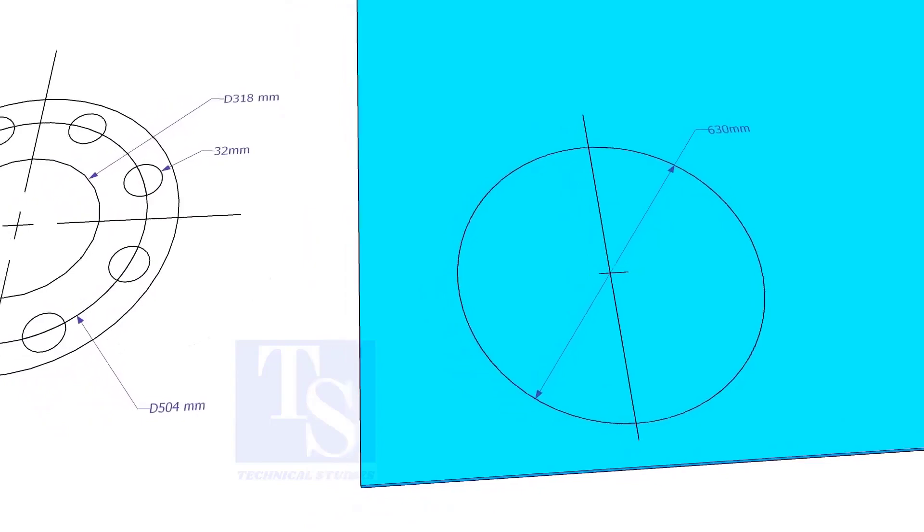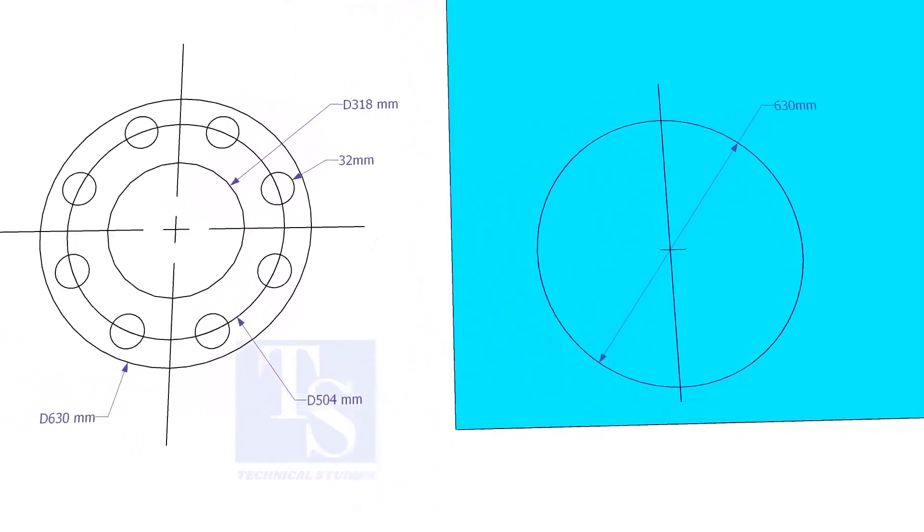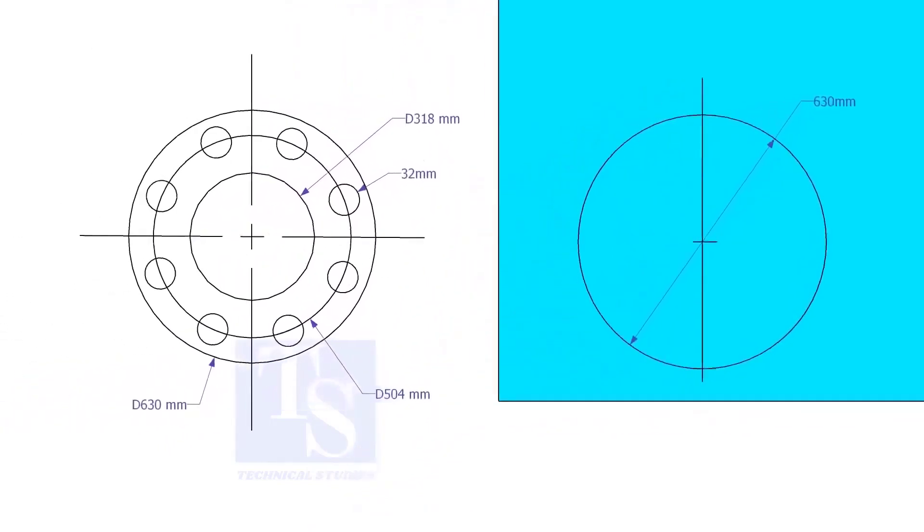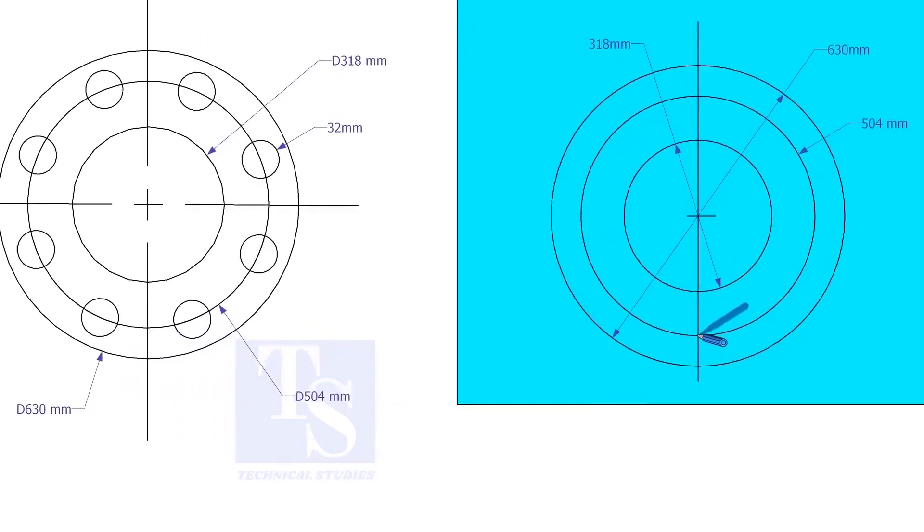Draw the OD and the ID circles. Draw the PCD. Punch mark where the PCD circle cuts the center line.